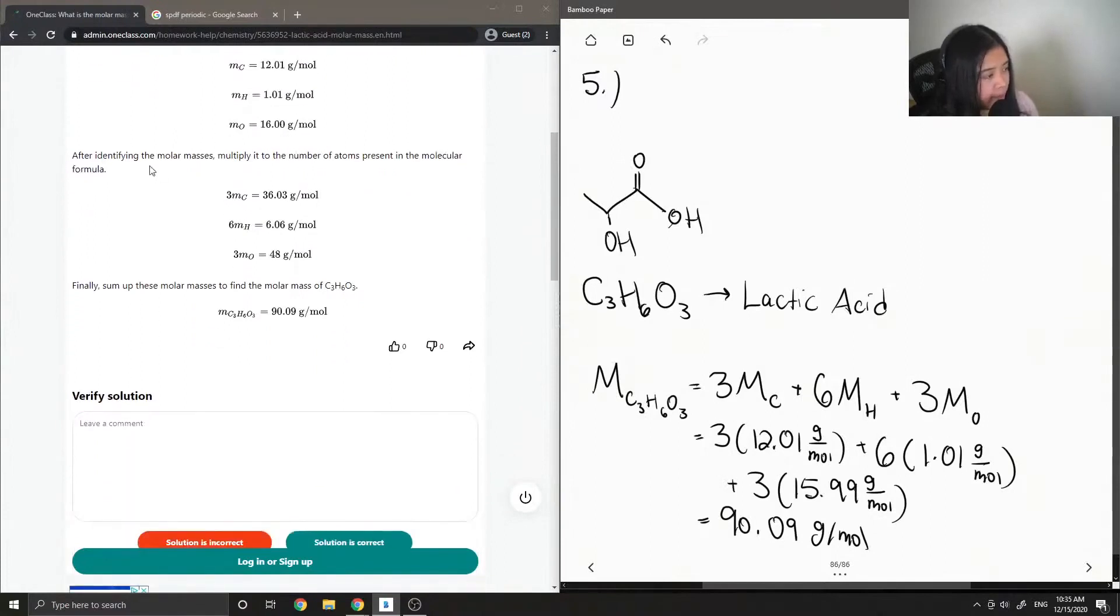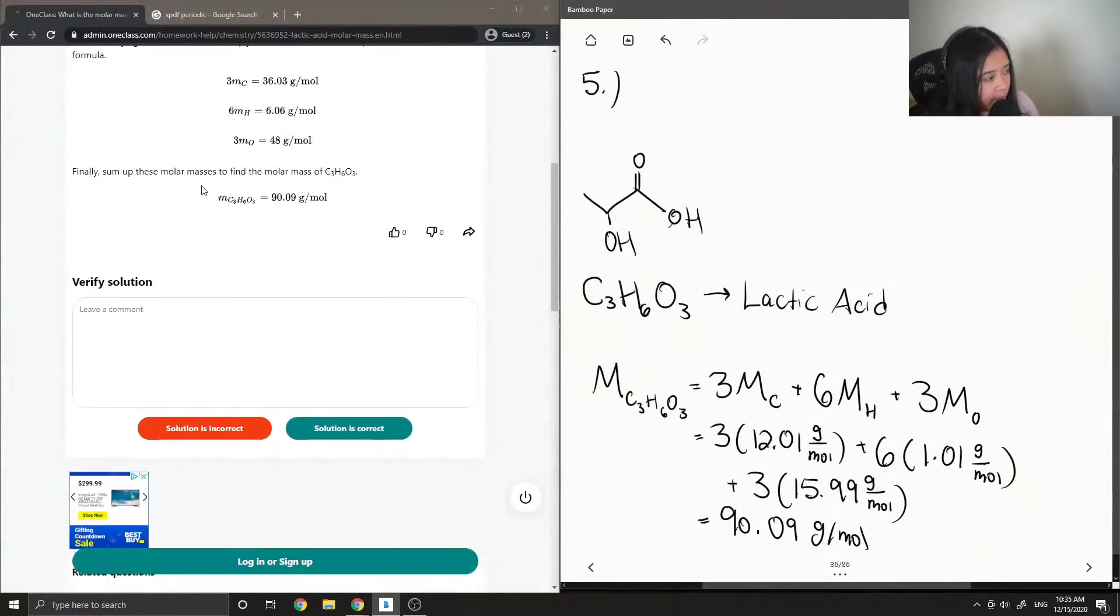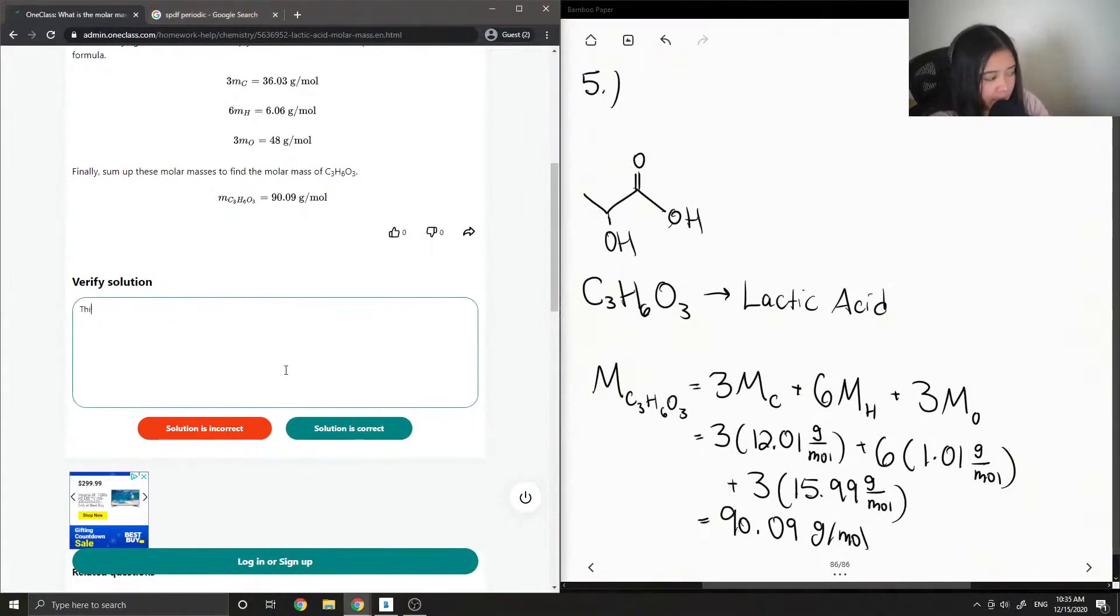Okay, so then they multiplied these different molar masses by how many atoms were present in lactic acid, and then they summed it all up to get 90.09 grams per mole. So this solution is correct.